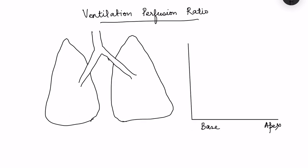In physiological conditions there is variation in both ventilation and perfusion from apex to base. Let us first see the variation in ventilation. Ventilation is less at the apex and more at the base. With each breath, we want to know how much the volume of air in the lungs changes — air should go in and come out.